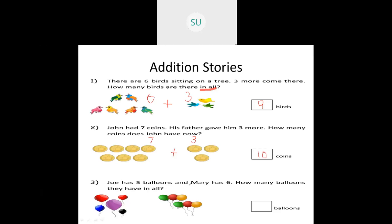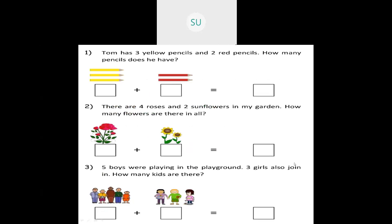Joe has 5 balloons and Mary has 6. How many balloons are there in all? Joe has 5, Mary has 6. So 5 plus 6 will be 11 — total they have 11 balloons. Then Tom has 3 yellow pencils and 2 red pencils. How many pencils does he have? 3 yellow plus 2 red — 3 plus 2 is 5.